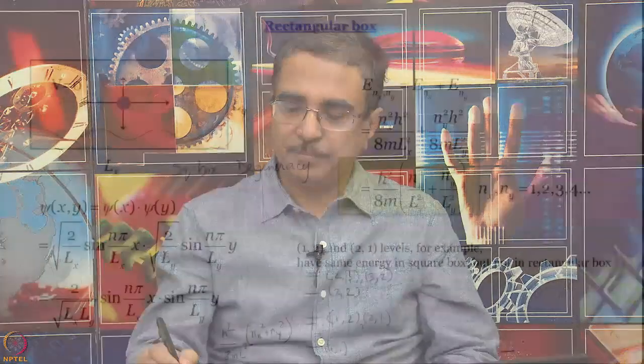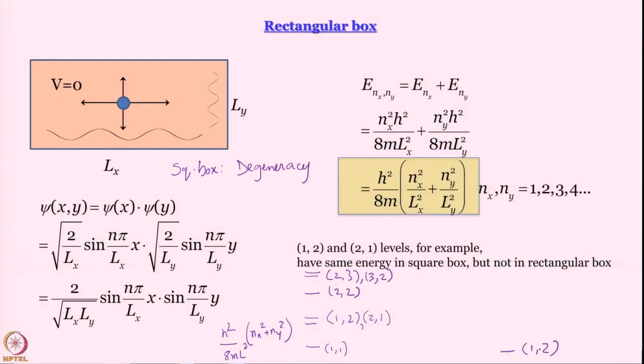What about a rectangular box? Well, 1,1 is the lowest energy level, fine. The next level is let us say 1,2. Is 1,2 and 2,1 do they have the same energy? No. 1,2 and 2,1 will have different energies and whether 1,2 will be lower or 2,1 will be lower will depend on what is the relationship between Lx and Ly. That is what will determine which one is lower, which one is higher. So degeneracy is not there.